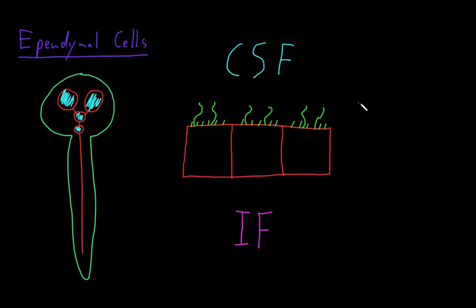One of the main functions of ependymal cells is to form a barrier between the cerebrospinal fluid and the interstitial fluid. So to some extent, they limit the movement of cells and large molecules between these fluid-filled spaces and the interstitial fluid of the tissue itself.